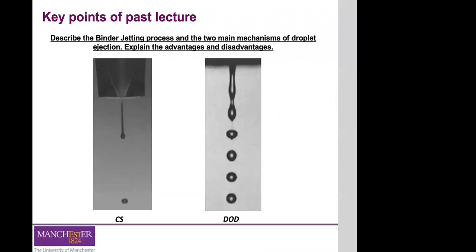As usual, just a brief recap of the main points from the previous lecture. We talked about binder jetting processes, and the main distinction between the commercially available systems is based on the ejection mechanism used for the formation of the droplets.